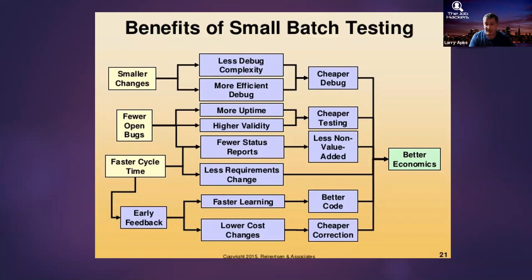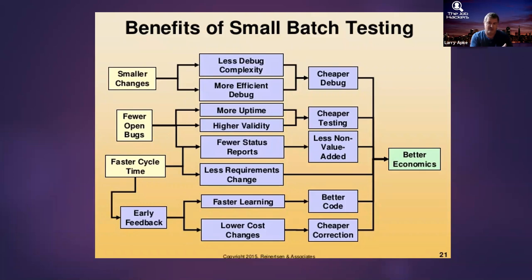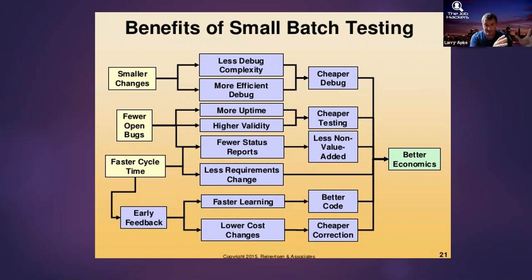If you're only making small changes, whatever effects those changes have are easier to isolate. If you make 20 different changes and there's a problem, you don't know which of those 20 caused it. But if I only make two changes, it's one or the other — pretty simple to debug. There are also fewer open bugs. They were originally called bugs because in old computers, moths were attracted to bright cathode ray tubes, burned out the tubes, and technicians had to literally go remove the bugs.